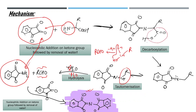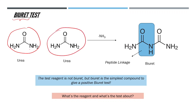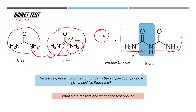Now we have the biuret test. Why is it called biuret? Biuret is formed from two urea molecules: the lone pair of one urea nitrogen attacks the carbonyl carbon of the second urea, a leaving group departs, a proton transfers, and ammonia is released — giving a biuret molecule that contains a peptide linkage.